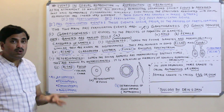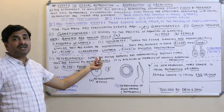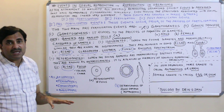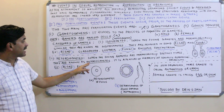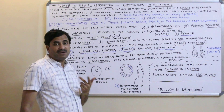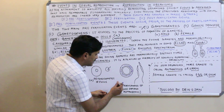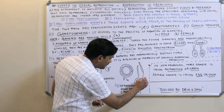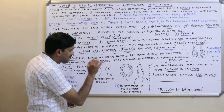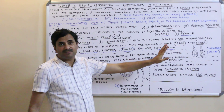Coming to the more common type of gametes, called heterogametes: as the name indicates, when the two fusing gametes are morphologically distinct — you can easily identify which is the male gamete and which is the female gamete — then they are called heterogametes. You can distinguish between the male gamete and the female gamete. It is a feature of the majority of sexually reproducing organisms.